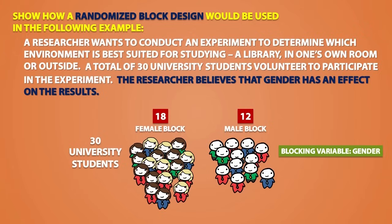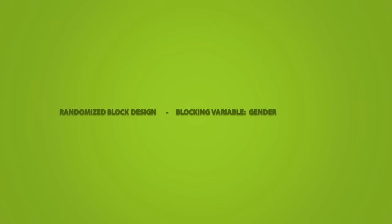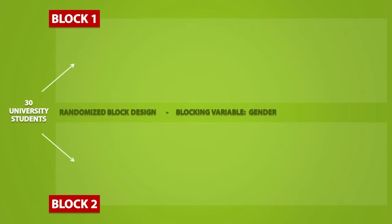Let's make a diagram out of this. We are looking at a randomized block design, and gender was the blocking variable. We started off with 30 university students and separated these students into two blocks — one for males and one for females. We determined that there were 18 females and 12 males.